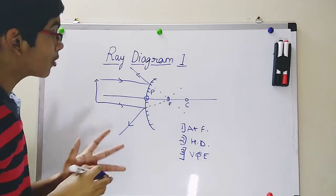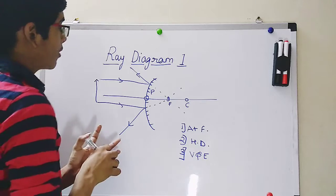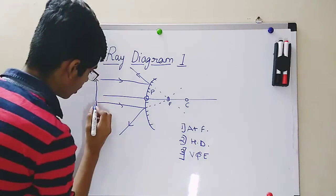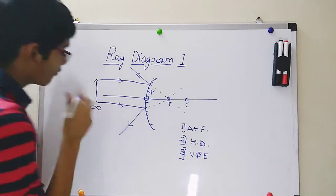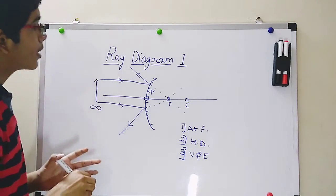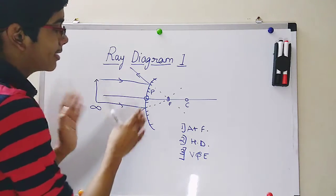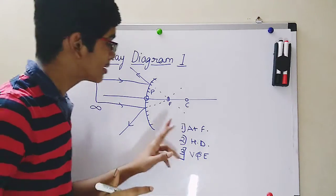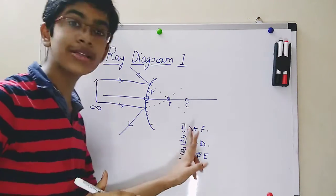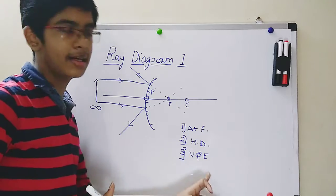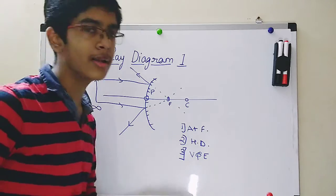So according to ray diagram 1, when the object is kept at infinity, all the light rays will appear to meet at the focus. The image is formed at focus, it is highly diminished, and it is virtual and erect.